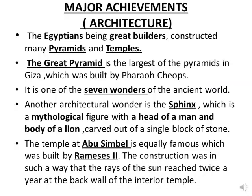Let us look at some major achievements. In the field of architecture, the Egyptians were great builders and constructed many pyramids and temples. The Great Pyramid is the largest pyramid in Giza, a city in Egypt situated on the west bank of River Nile. It was built by Pharaoh Khufu and served as his tomb.